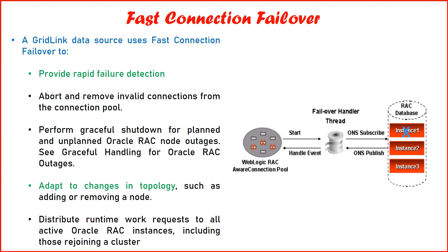The first property is fast connection failure. This active grid link data source is specifically designed to work with the Oracle RAC cluster — a setup where you have multiple database instances running in the backend with enhanced capabilities enabled by default in the database. If your WebLogic server wants to take the benefits of all those database technologies, certain features get enabled with the help of the active grid link data source so your application can benefit from all those database features.